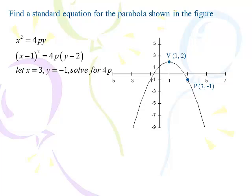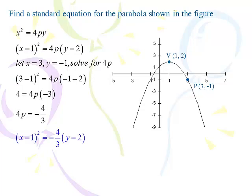So I put the vertex in there: x minus 1, y minus 2, and what I'm missing is 4p. That's where the point comes in. I'm going to let x equal 3, let y equal negative 1, and plug them in for x and y to solve for 4p — not p, just 4p. So 3 minus 1 squared is 4, negative 1 minus 2 is negative 3, divided by negative 3, and 4p comes out to be negative 4 thirds.